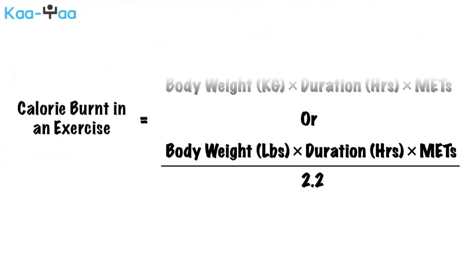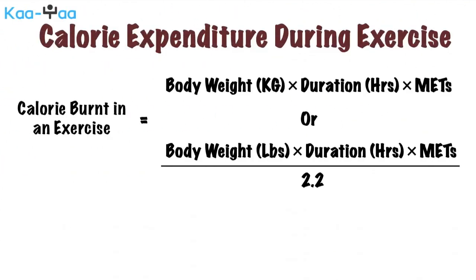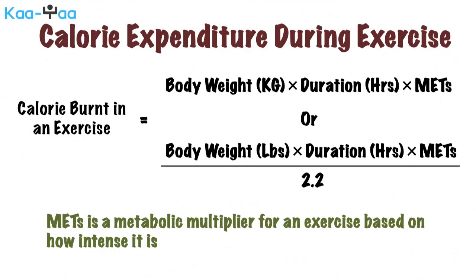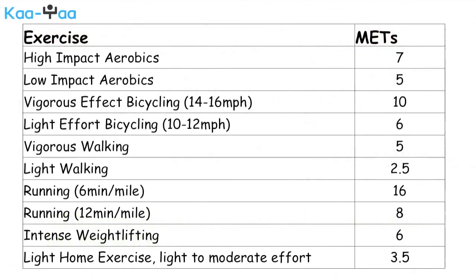Finally, using this formula, you can calculate the calorie expenditure during exercise, where METS is a metabolic multiplier that is applied to any exercise based on how intense it is. Shown is the list of METS for different types of exercises.